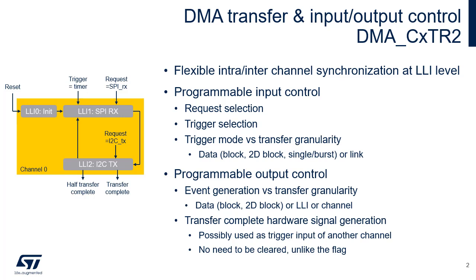The inputs of a DMA channel are the request selection — for example, the SPI RX and the I2C TX signal in the figure — and the trigger input. A programmed DMA transfer can be triggered by a rising or falling edge of a selected input trigger event, for example the timeout in the figure. The transfer granularity conditioned by the trigger can be either the burst level, block level, the 2D repeated block level for channels 12 to 15, or the link level for the GPDMA.